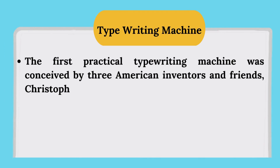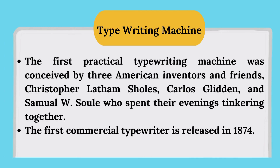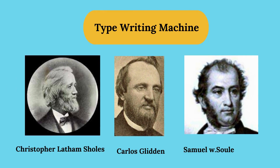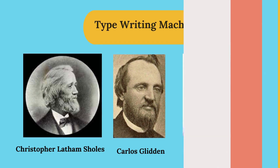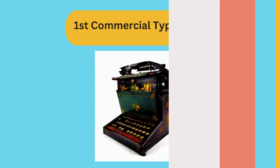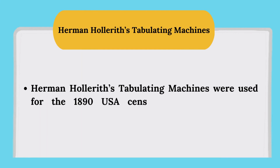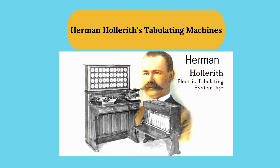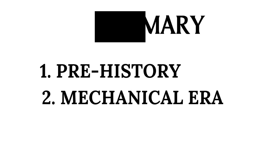The first practical typewriting machine was conceived by three American inventors — Christopher Latham Sholes, Carlos Glidden, and Samuel W. Soule — who finally released the first commercial typewriter in 1874. Hermann Hollerith's tabulating machines were used for the 1890 USA Census, and the machines used Jacquard-style punch cards. In today's class we learned about prehistory and the mechanical era, and we'll discuss the electrical and mini eras in the next video. Thank you for watching!